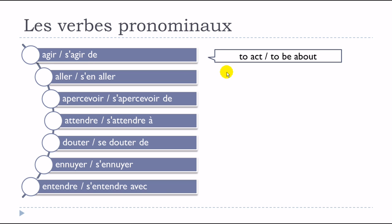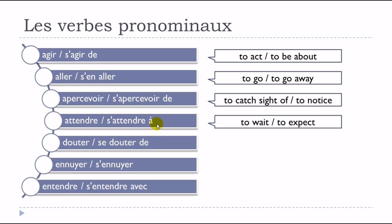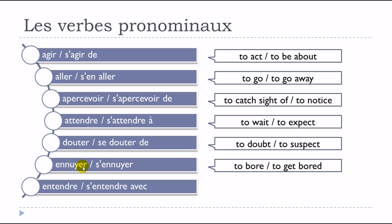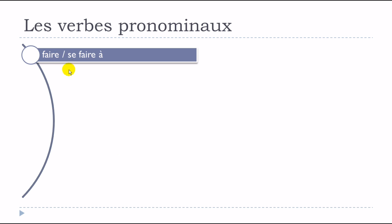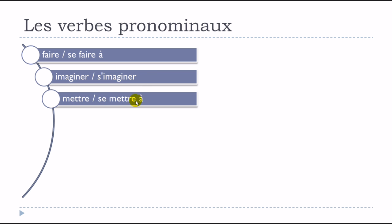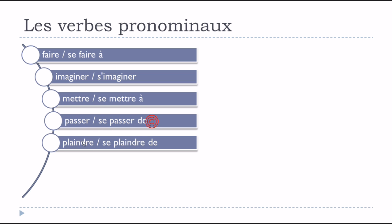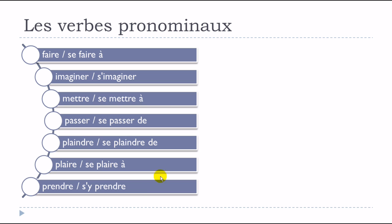Their translations: agir is 'to act', s'agir de is 'to be about'. The list continues: aller / s'en aller, apercevoir / s'apercevoir de, attendre / s'attendre à, douter / se douter de, ennuyer / s'ennuyer, entendre / s'entendre avec, faire / se faire à, imaginer / s'imaginer, mettre / se mettre à, passer / se passer de, plaindre / se plaindre de, plaire / se plaire à, prendre / s'y prendre.